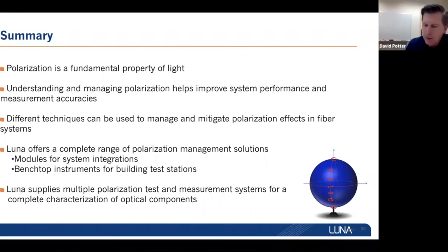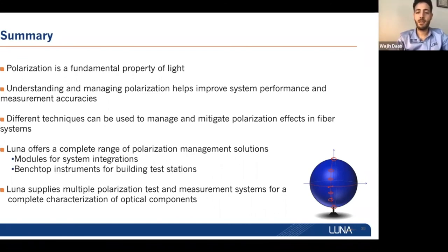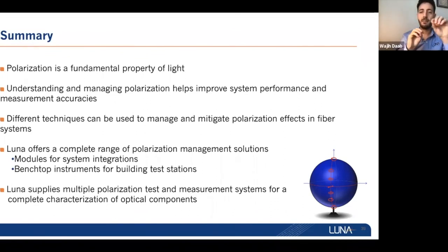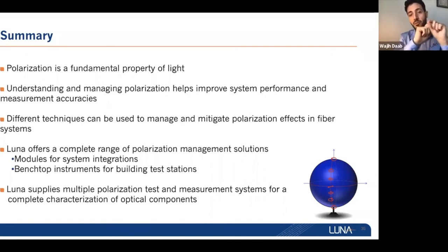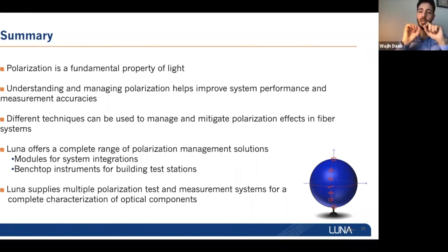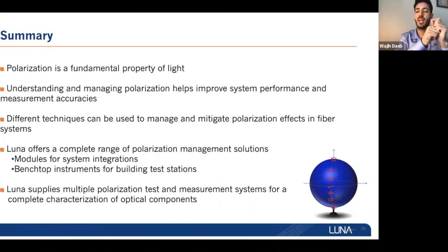Question: what scrambling mode is recommended for PDL measurements? This comes up very frequently. If you use PDL measurement based on scrambling, you are trying to reach all possible states to hopefully hit the state that causes power maximum and power minimum. It is highly desirable to use a polarization scrambler with smooth, continuous traces — not discrete. If you do discrete scrambling, you might hit two points and the actual maximum or minimum is in between. Smooth and continuous polarization scramblers are highly desirable for PDL measurement.